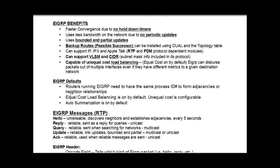For EIGRP defaults: routers running EIGRP need to have the same process ID number or AS number to form adjacencies with their neighbors. Equal cost load balancing is on by default, but unequal cost is configurable. And auto-summarization — EIGRP summarizes routes by default, and oftentimes you're going to have to turn this off in EIGRP.